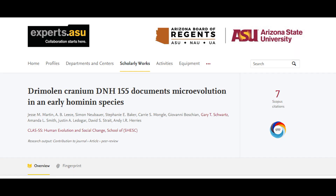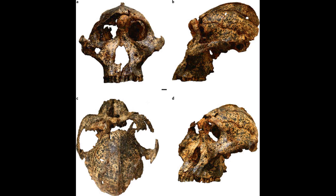An intriguing study came out in early 2021 concerning a Paranthropus robustus fossil designated DNH-155, found in a paleo cave dated at between 2.04 and 1.95 million years old. DNH-155 is slightly smaller overall with a slightly smaller cranial capacity and occurs a bit earlier in time than other robustus individuals. The researchers argued that this is a clear example of microevolution within the robustus species, rather than assigning DNH-155 to a new species.